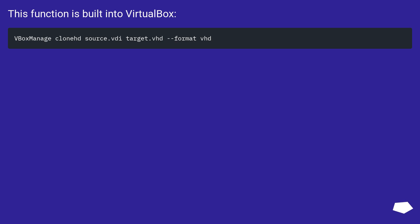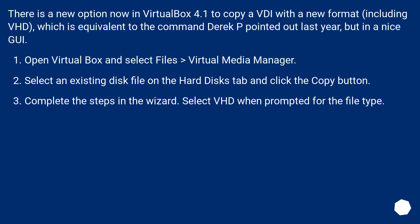This function is built into VirtualBox. There is a new option in VirtualBox 4.1 to copy a disk with a new format, including VHD, which is equivalent to the command Derek P pointed out, but in a nice GUI. Open VirtualBox and select File > Virtual Media Manager. Select an existing disk file on the Hard Disks tab, click the Copy button, and complete the steps in the wizard. Select VHD when prompted for the file type.